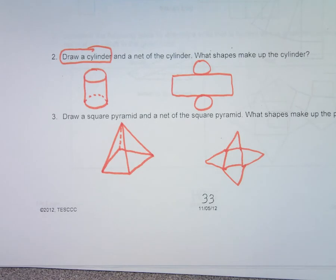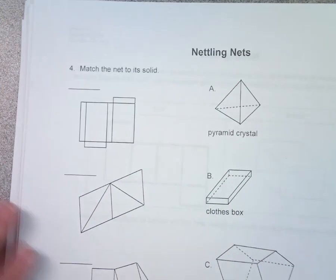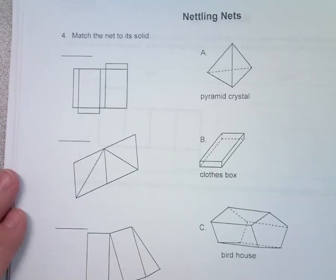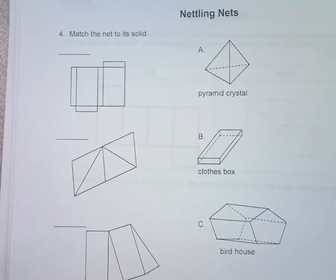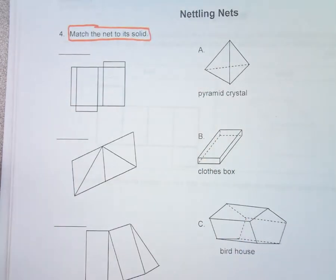Did you guys do much with nets back in elementary school? This next problem is matching — match the net to its solid. Take a second and figure out which one's A, which one's B, which one's C, and which one's D, and then we'll go over the answers.